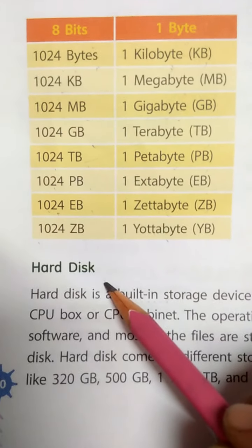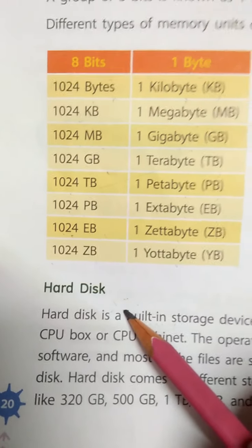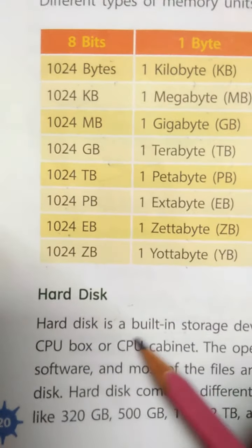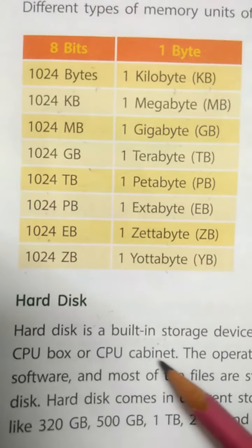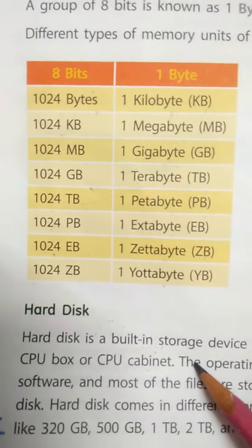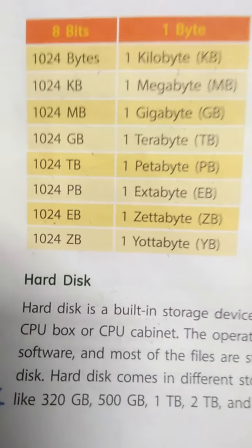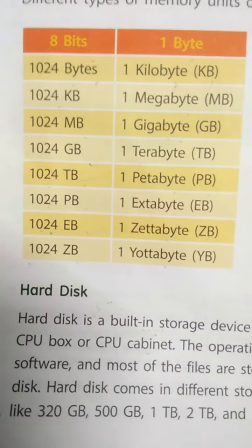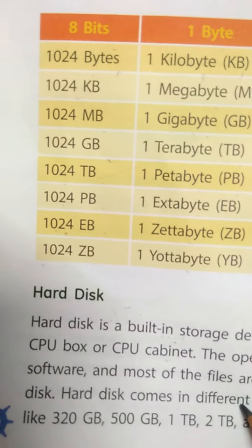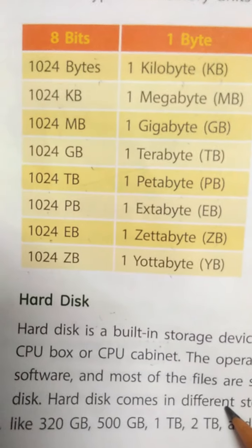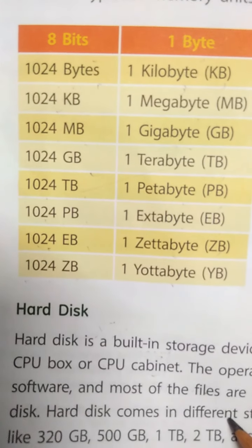Students, our next topic is hard disk. A hard disk is a built-in storage device, meaning it is already fixed inside the CPU. A hard disk is the computer's own memory and it has a large storage capacity. But nowadays, external hard disks are also available in the market, which can be connected externally to increase the computer's memory. These are also used as external storage devices.